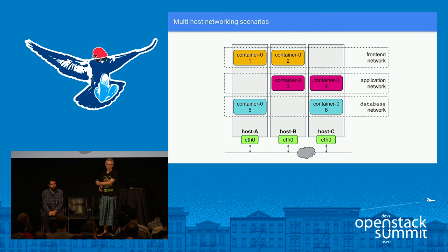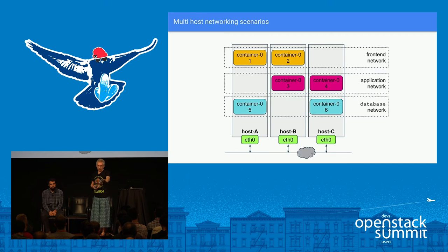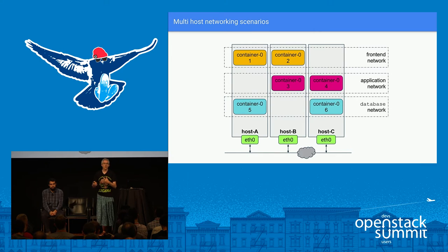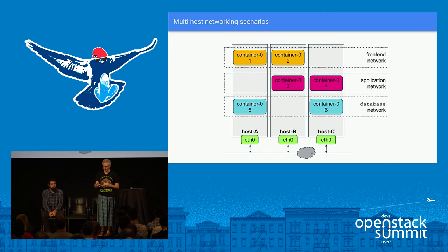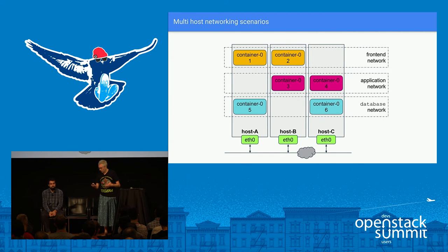But if you have a setup with three hosts and you want the yellow containers to be able to talk to each other — one on host A, one on host B — then whatever IP address container one has, it's going to go outside host A. A little bit more care is needed to avoid allocating overlapping IP addresses in cases where you don't want overlapping IPs. Secondly, you need to address how the data gets from one host to another.